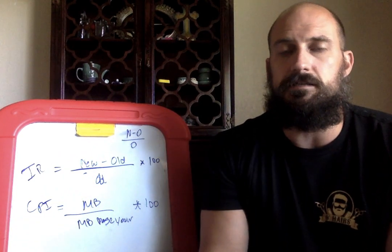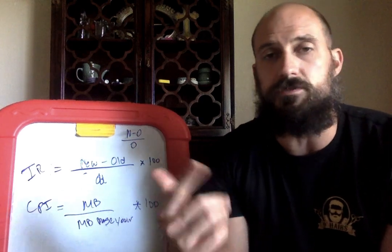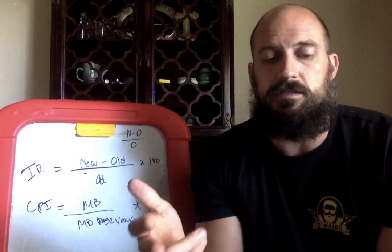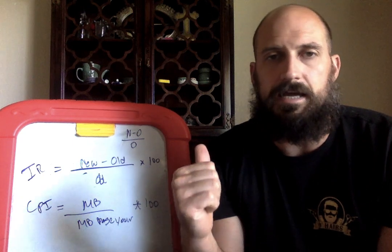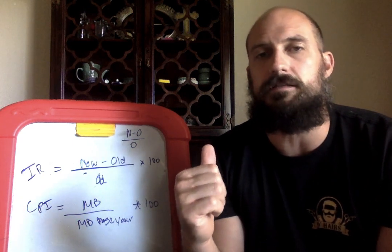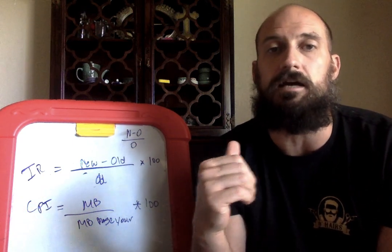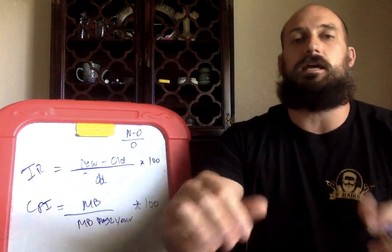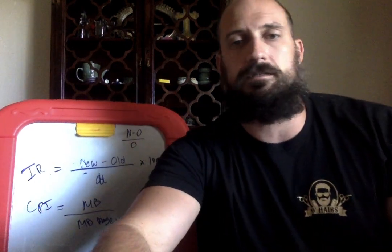That's going to be it for topic 2.4, price indices and inflation. The things we covered were inflation, deflation, disinflation, CPI, and the substitution bias and limitations of CPI. All right guys, thank you, and we'll see you in class.